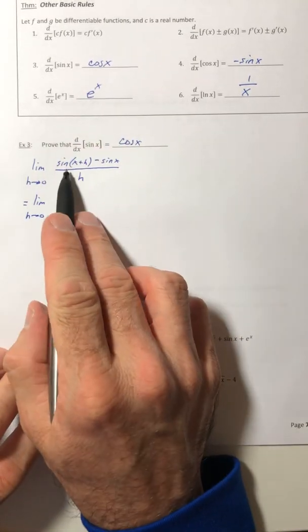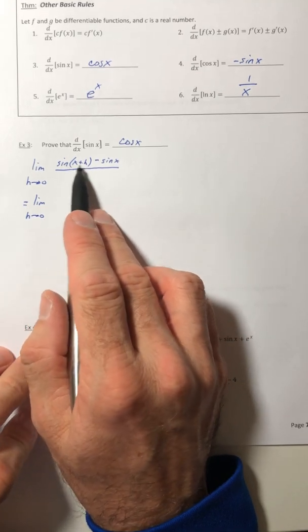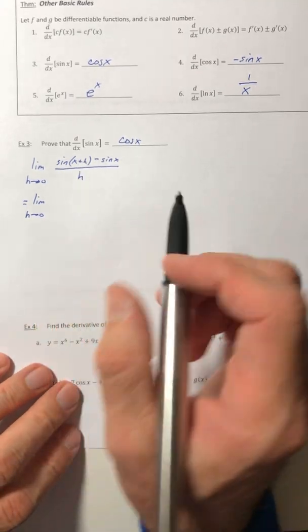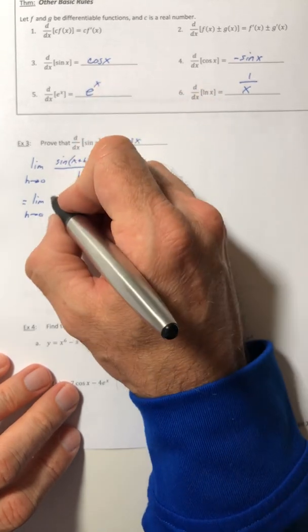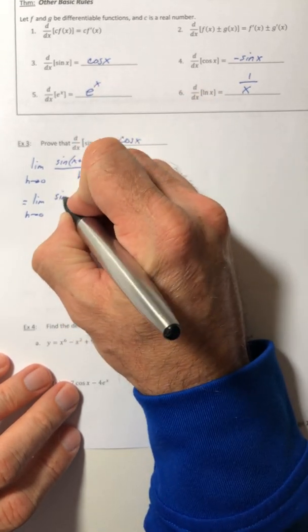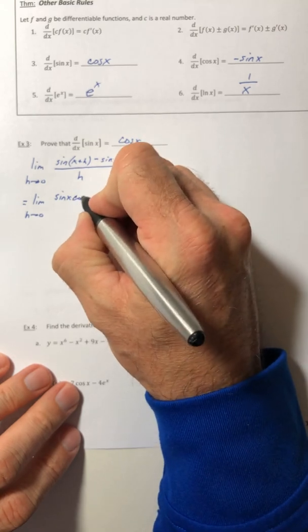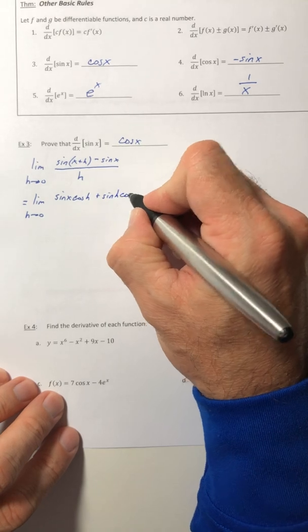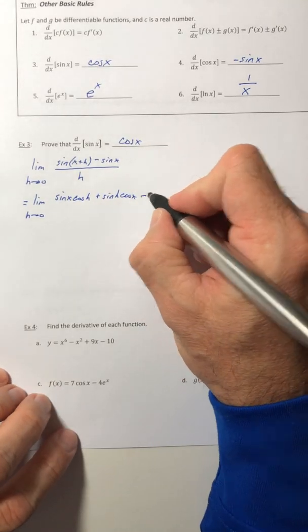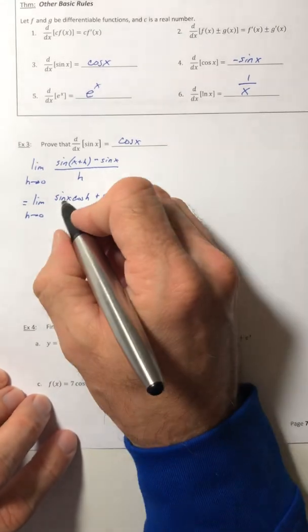Okay, so with this we're going to use that sum identity with sine and kind of expand this guy out. So that would be sine(x)cosine(h) plus sine(h)cosine(x), and then minus sine(x).